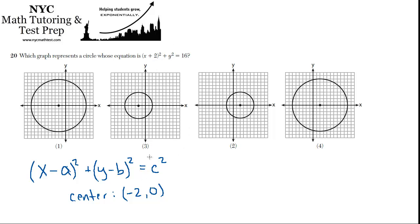So if the center is at negative 2, 0, that occurs in this one and this one. These are at 2, 0. So we can get rid of these two choices.